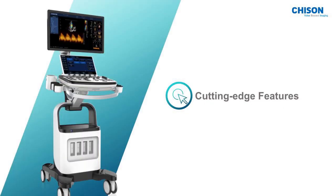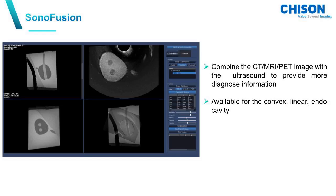Let's start from the first part: cutting edge features. The first feature I'd like to introduce is SonoVusion. SonoVusion is a technology that can combine CT, MRI, and PET images with ultrasound to provide more diagnostic information. It is available for convex, linear, and intracavity probes.